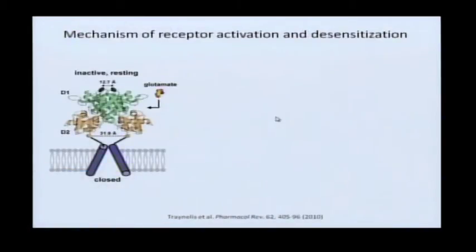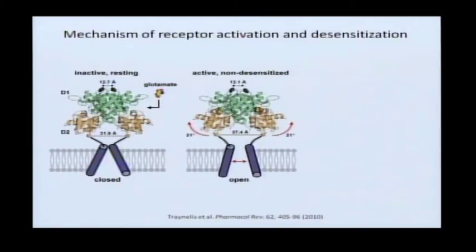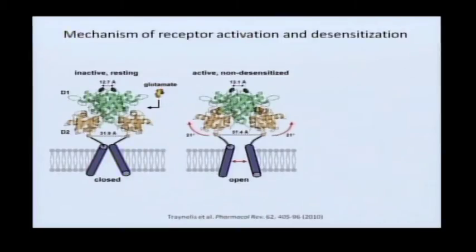We can now put together a very simple model of receptor gating: glutamate binds to the clamshells, clamshells close, the ion channel opens. Desensitization involves rupture of this dimer interface and return of the ion channel to a closed resting-state conformation.